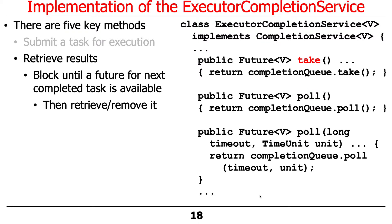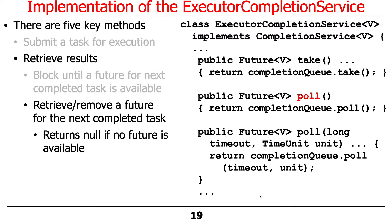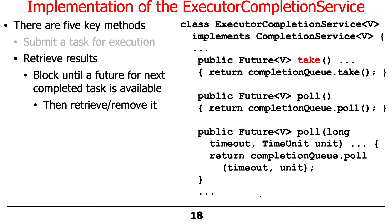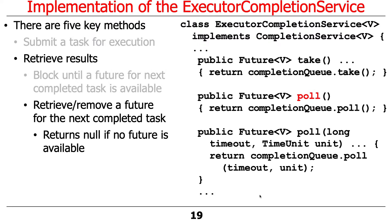When take is called, it blocks until there's something in the completion queue and then takes off the completed future. Keep in mind that future is already completed — you don't actually have to block on the future itself. The reason you know it's complete is it wouldn't have been placed in the queue if it wasn't already completed.